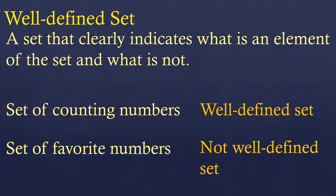There is no fixed set of elements in a set of favorite numbers, that's why it's not a well-defined set. For a set to be well-defined, it must be the same set of elements whoever is writing that set — meaning it must be the same for all people. A set of favorite numbers would be different for every person because we don't have the same favorite numbers.